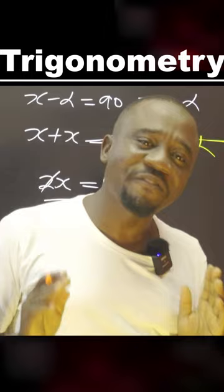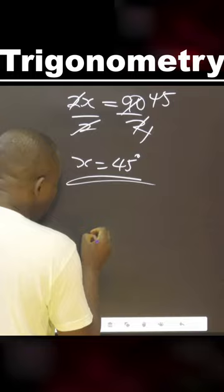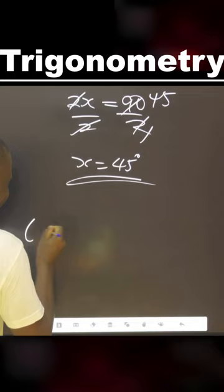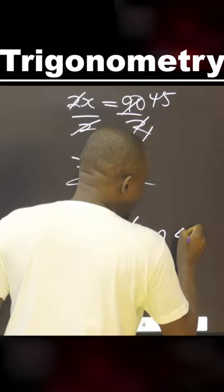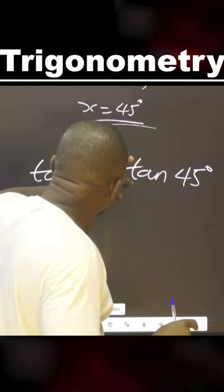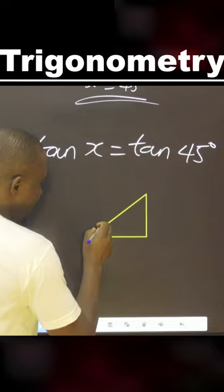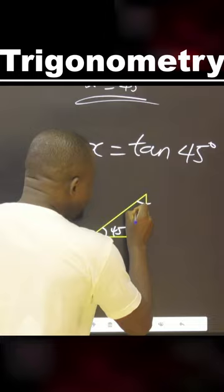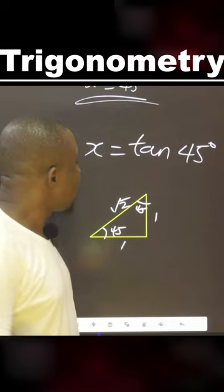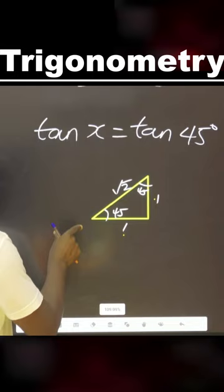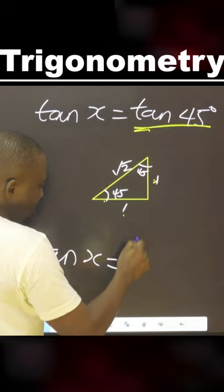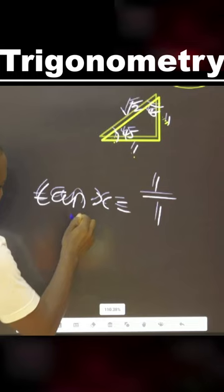Pulling X to one side: X plus X equals 90, so 2X equals 90, and dividing by 2 gives X equals 45 degrees. Now that we have 45 degrees, we can introduce tan S. Tan S equals tan 45 degrees. Using the special angle triangle where both angles are 45 degrees and the sides are 1, 1, and square root of 2, tan 45 equals opposite over adjacent equals 1 over 1. Therefore tan S equals 1.